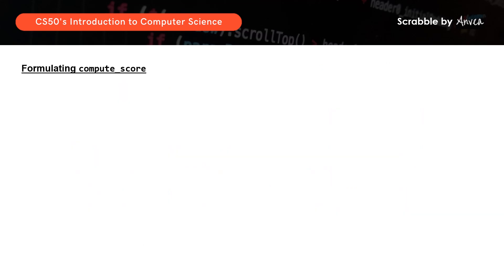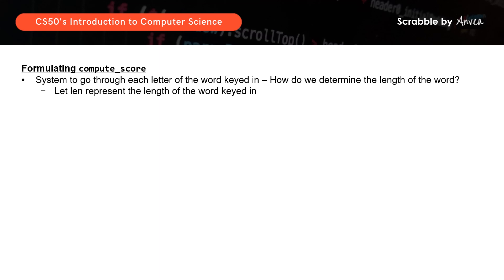So let's go into compute score in detail. So firstly, the system will go through each letter of the word keyed in. How do we determine the length of each word? So let len represent the length of the word keyed in, as in the total number of letters. So we'll declare that the integer called len equals to strlen word, where we learnt that strlen is used to find out the length of a string. So a letter in the word keyed in is represented by word square bracket i. So for every letter represented by word and square bracket i, we need to find its position in the alphabet and the corresponding score.